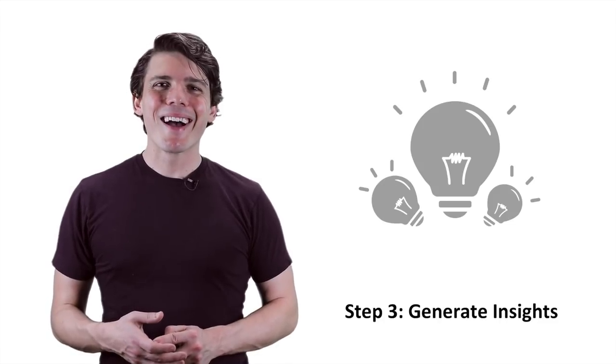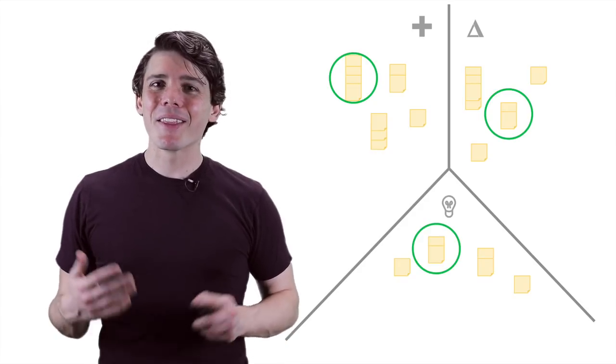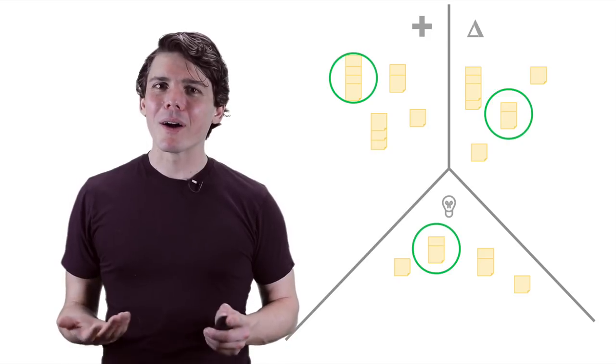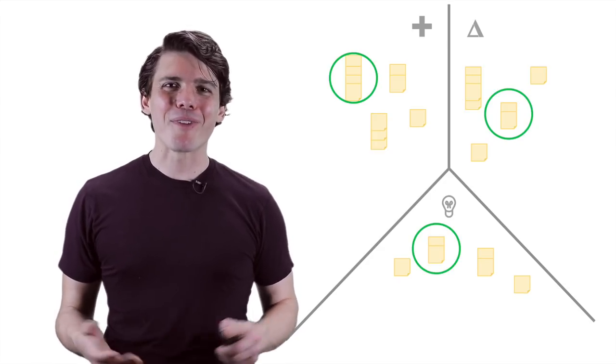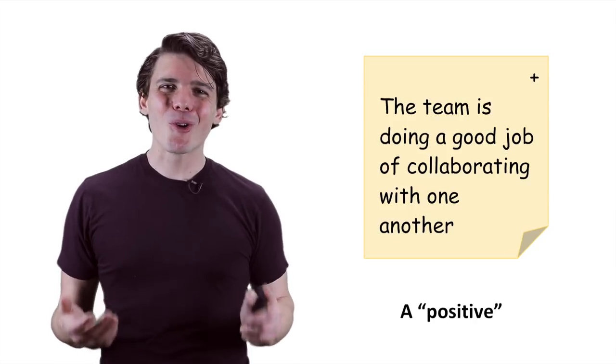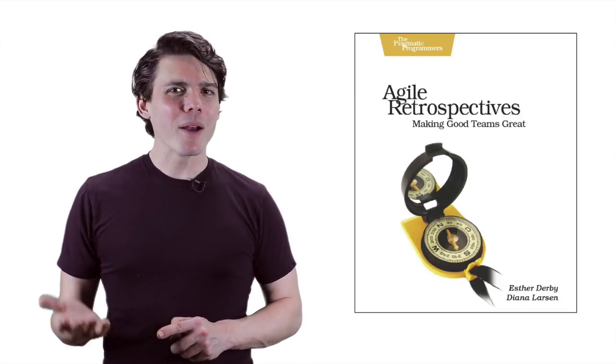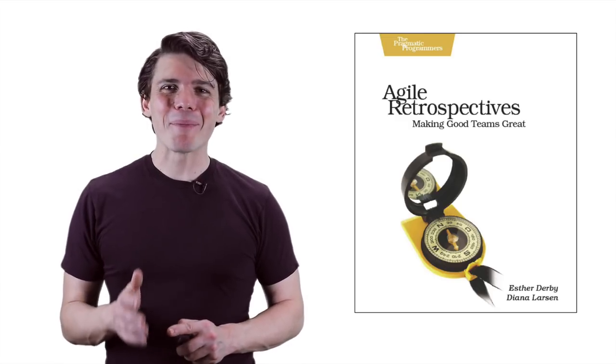Step three is to generate insights. I like to add a brief intermediary step, which is to choose the top positives, deltas, and or insights that we'd like to focus on, about one to three total. Once you have the top one to three items, dig in more on each one. The book, Agile Retrospectives, has a good activity called prioritize with dots that can make this go faster. If a positive reads, the team is doing a good job of collaborating with one another, and a delta reads, our staging server keeps going down, try to understand the root cause of these conditions. Some teams find it helpful to ask why five times, give or take, until you get to your root cause. Agile retrospectives suggest other exercises as well. As a hint, if you're rarely surprised by your root causes, you may not be digging deep enough.